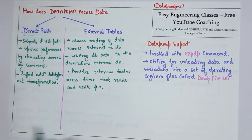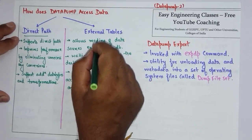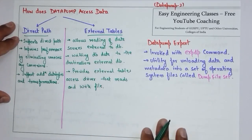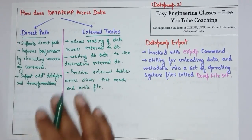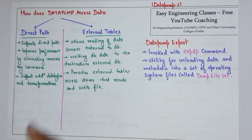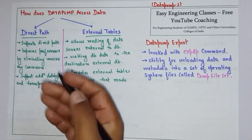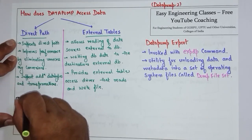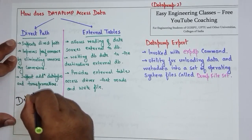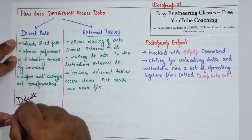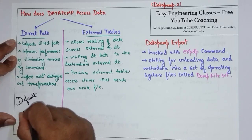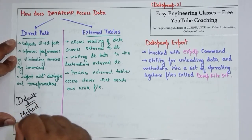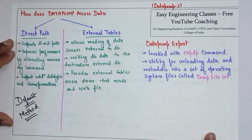So these are the two different types of Data Pump access methods: Direct Path and External Tables. If there is a question about the difference between the two, you can use these points to write your answer. Direct Path is the default method used to access data using Data Pump.